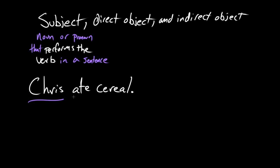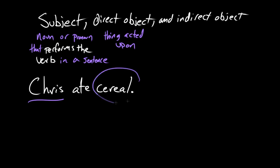Rosie, what is a direct object? So a direct object is the main thing in the sentence that is being acted upon. So in this sentence, "Chris ate cereal," cereal would be the direct object because it's the thing being acted upon — it's being eaten.